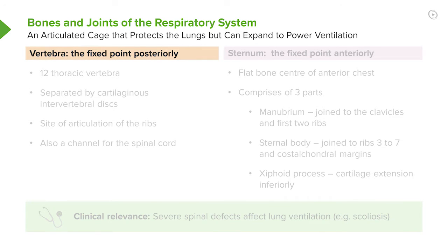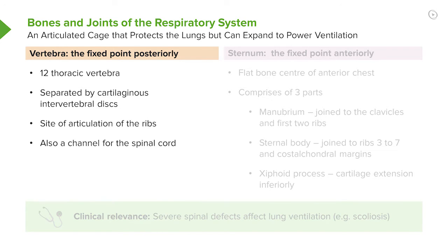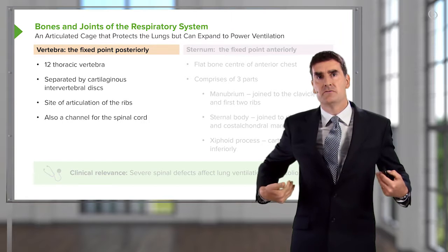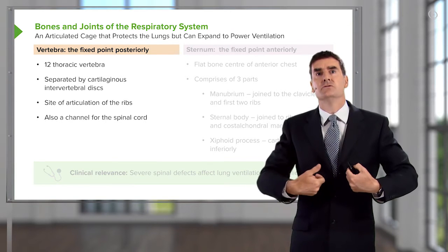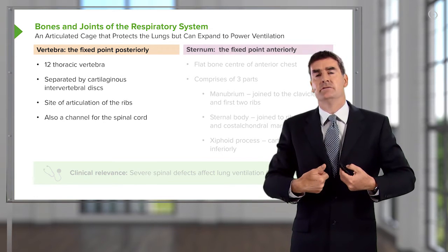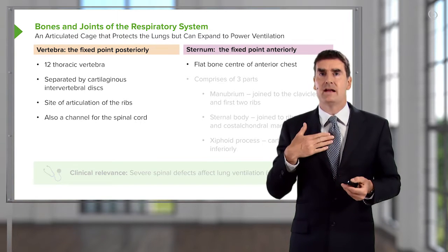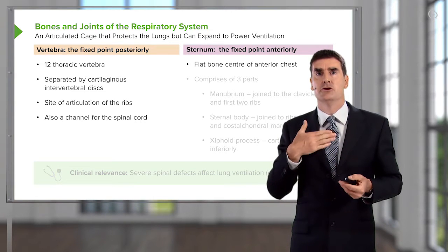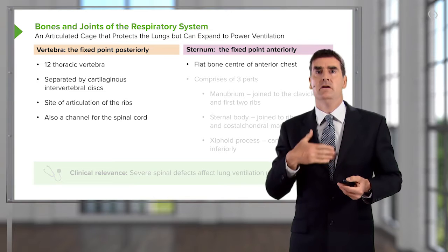The posterior fixed point is the thoracic vertebrae. There are 12 thoracic vertebrae, each separated by cartilaginous intervertebral discs. The vertebrae are the site of articulation of the ribs, which curve around from the vertebrae to meet the fixed point anteriorly.